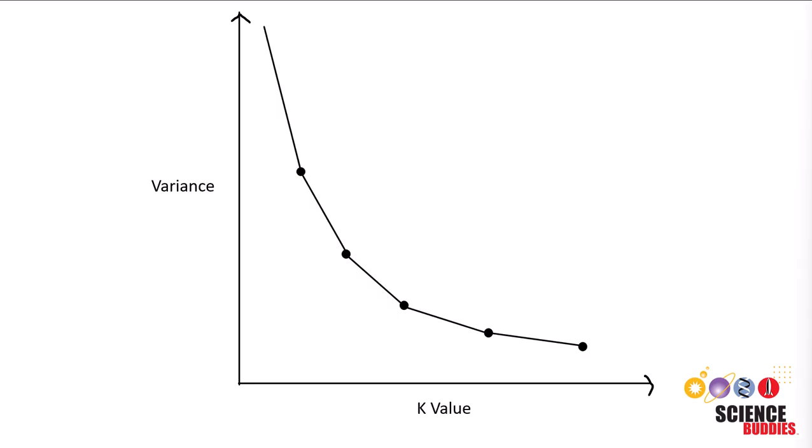Another way to pick a value of k is called the elbow method. And to use it, you can plot the k-value and variance on a graph and pick a point where variation doesn't go down as quickly, often resembling the crook of the elbow. And in this case, it looks like the crook of the elbow is at 3.